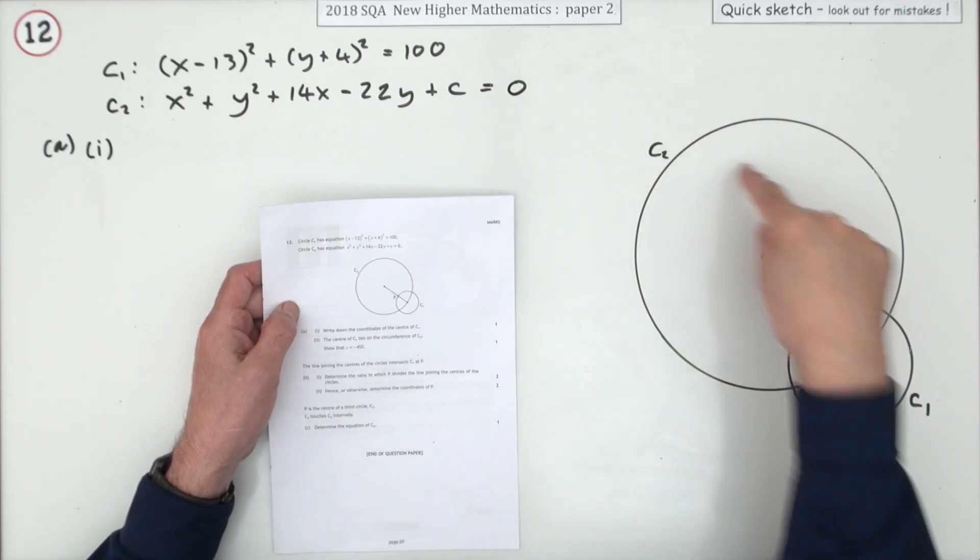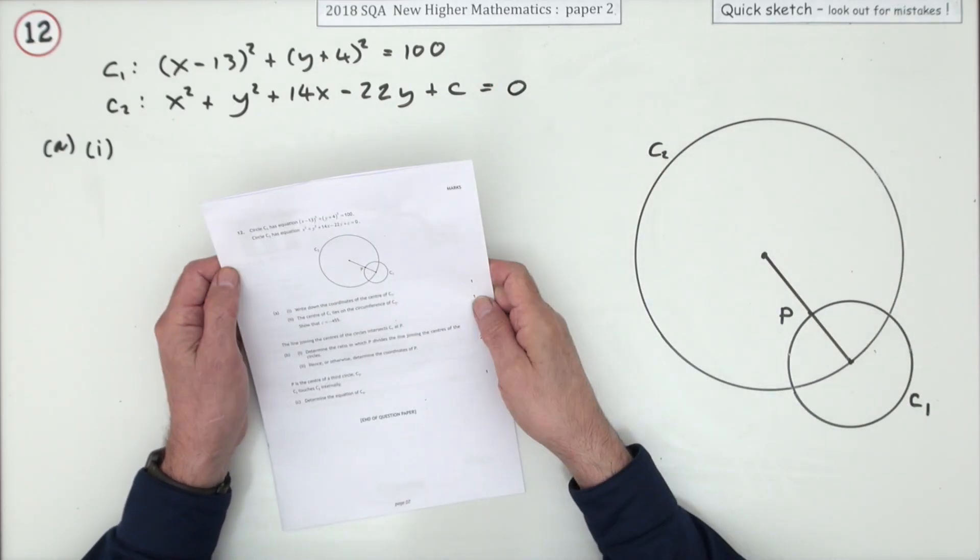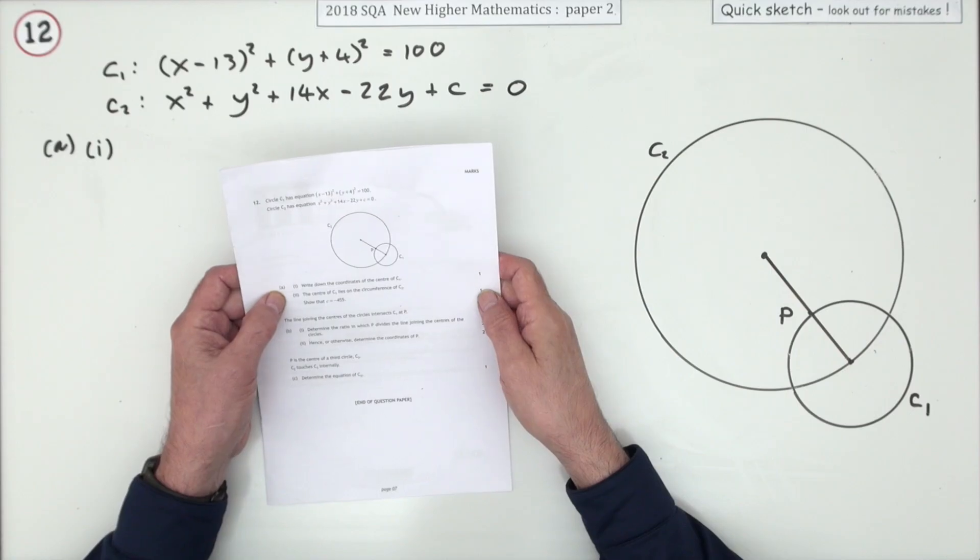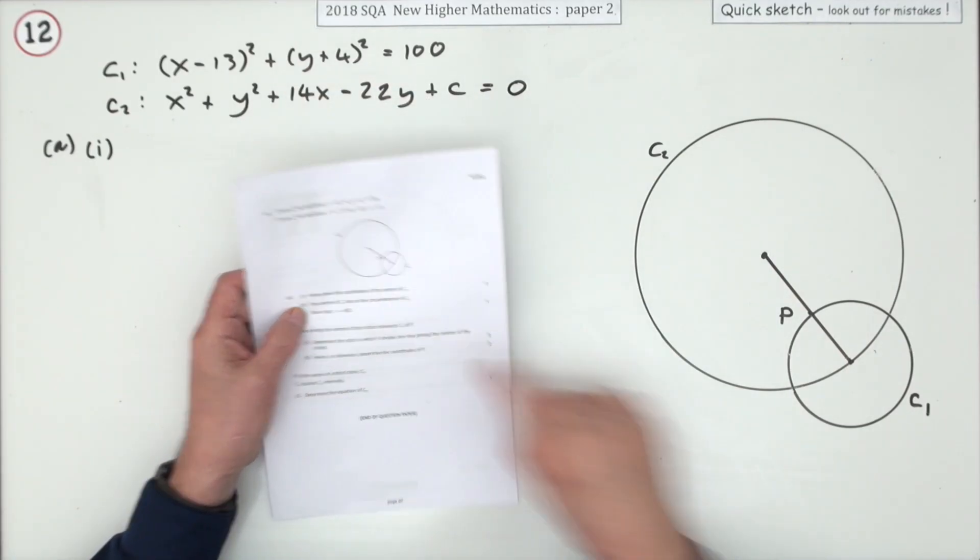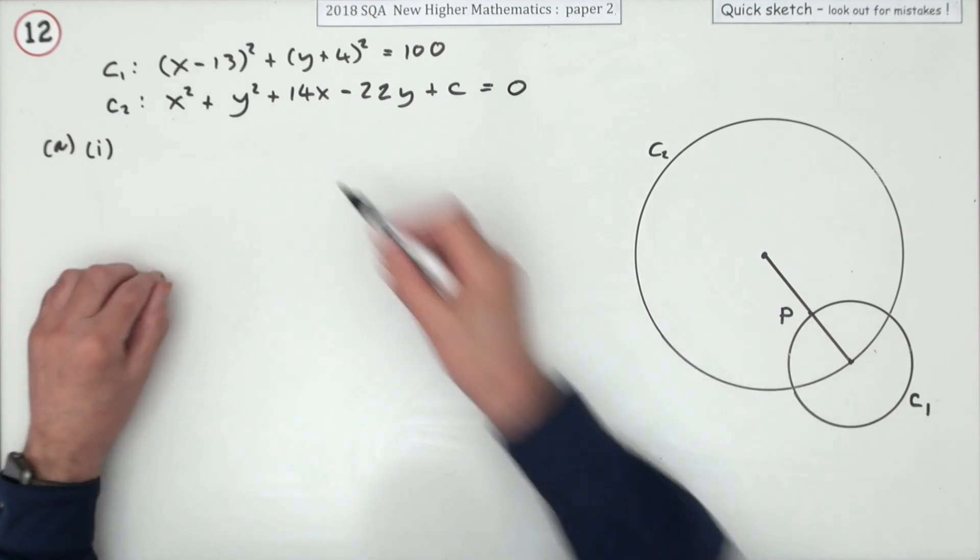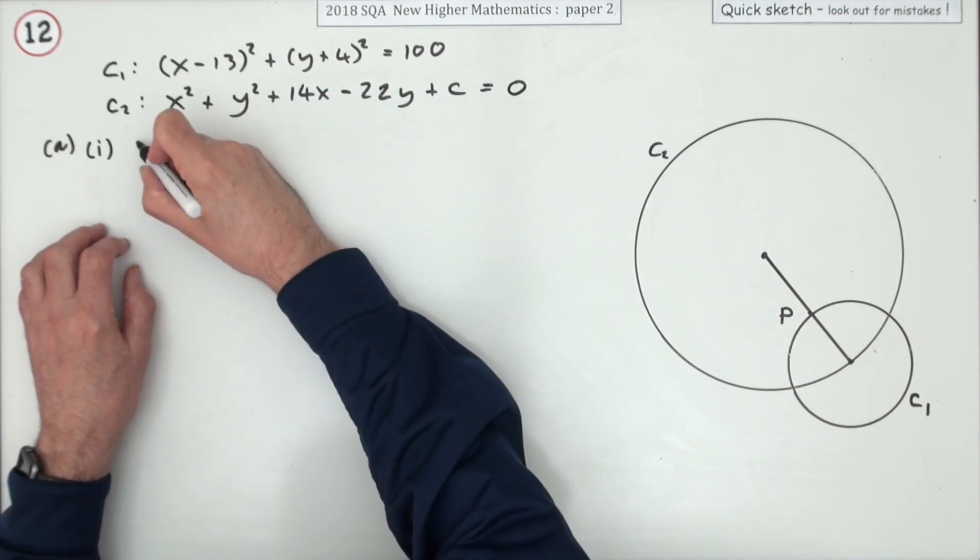Anyway, you've got two circles here, C1 and C2, and you have their equations that use both of the forms. For part A, what are the coordinates of the center of C1? One of the first things you do when you see equations is usually just write down centers and radius whenever you can.